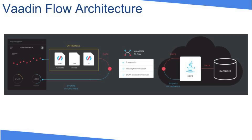So what is Vaadin Flow? Flow is the part of the Vaadin 10 platform that connects the Java API with the web components or the web platform. Flow provides automated bi-directional communication between the server and the browser, giving Java developers full access to all the modern web, and makes it easier to connect from the backend to the UI.